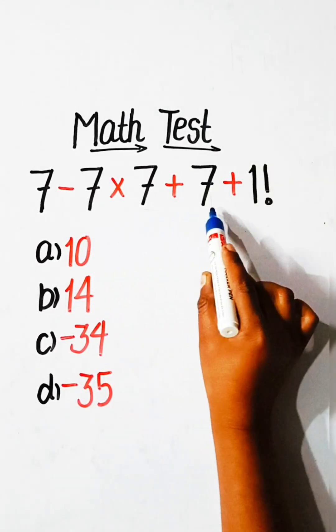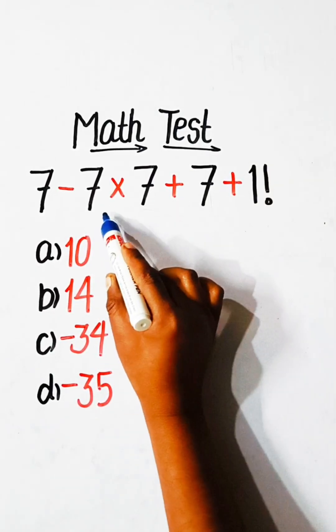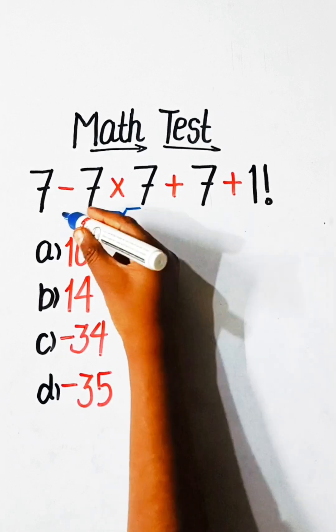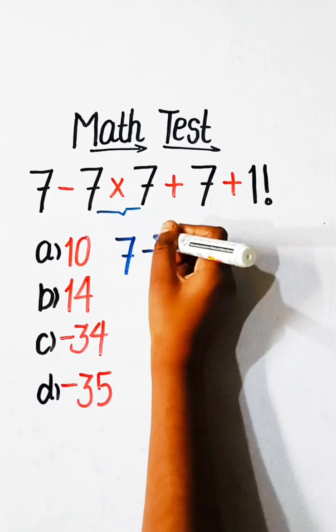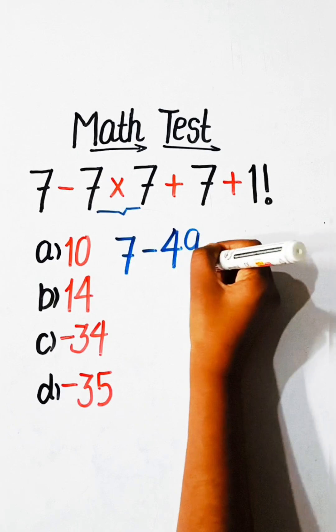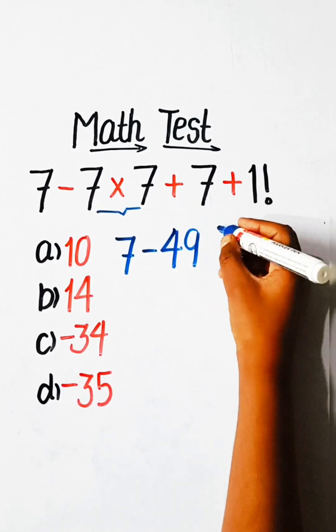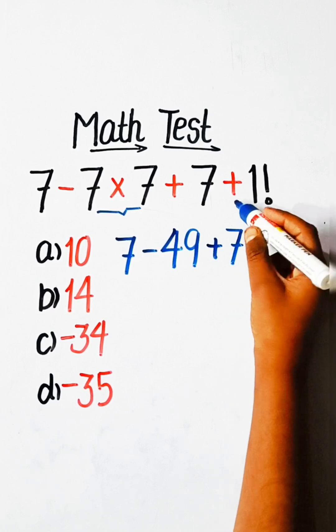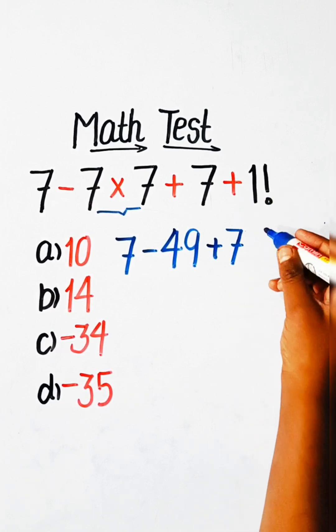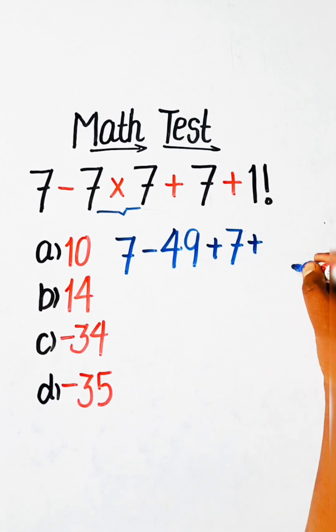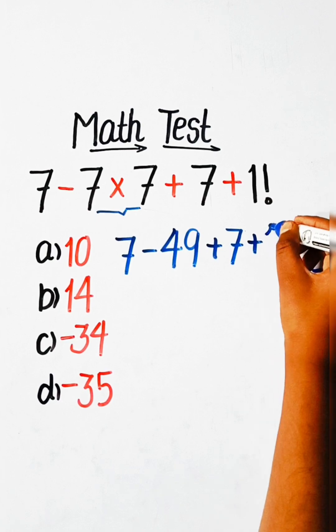In this equation first of all we have to solve multiplication, so we will write here 7 minus 7, 7s are 49, plus 7 plus 7 plus 1 factorial. So the value of 1 factorial is 1, so we will write here 1.